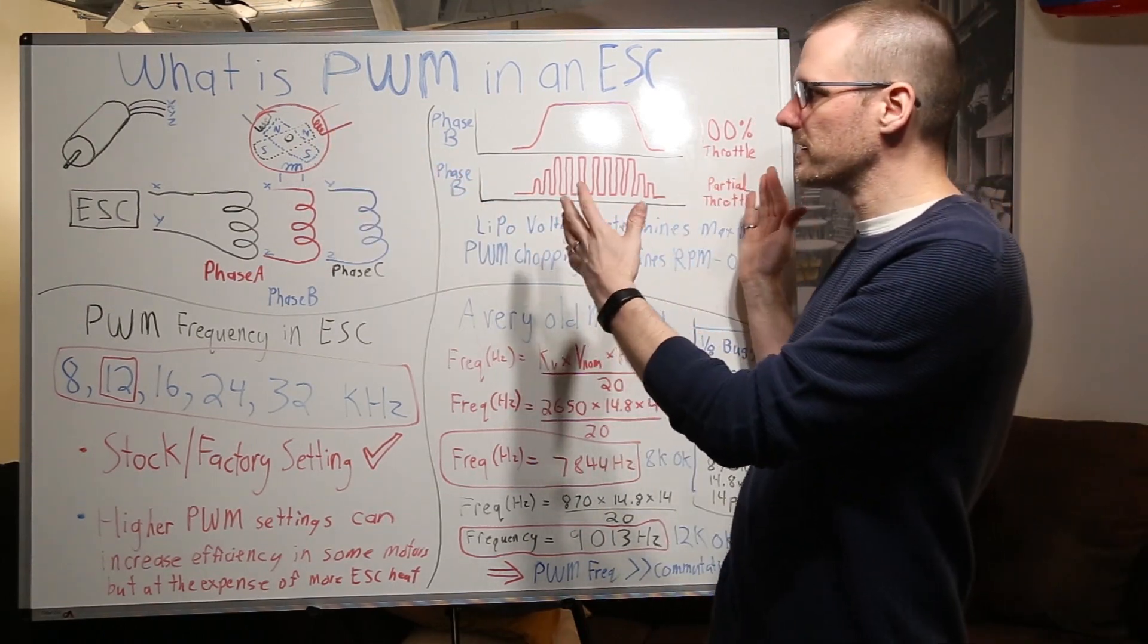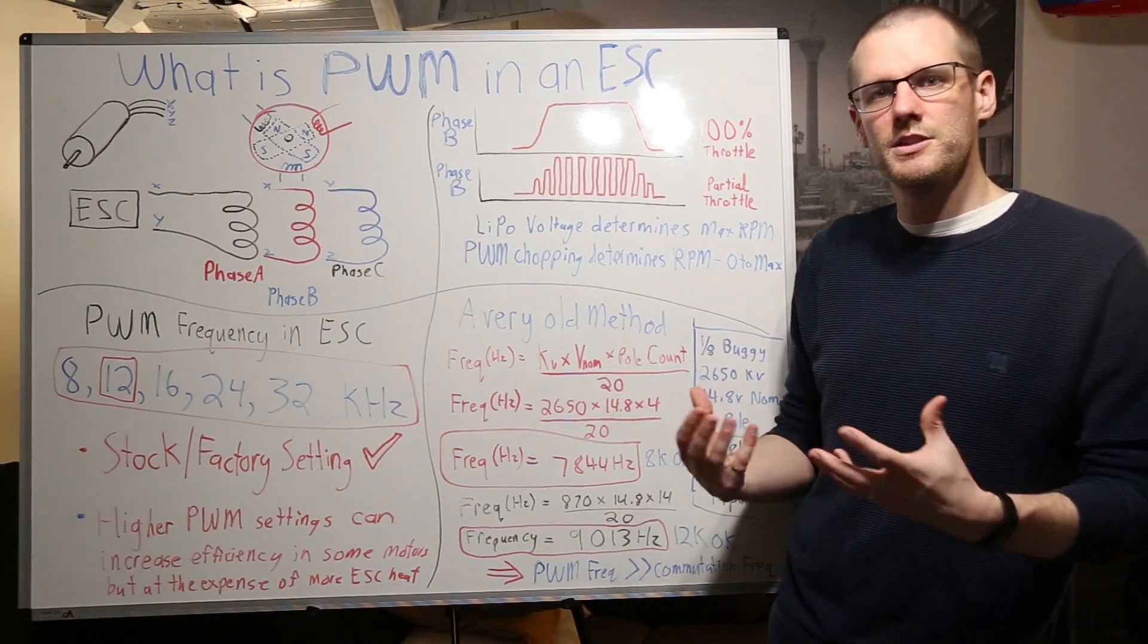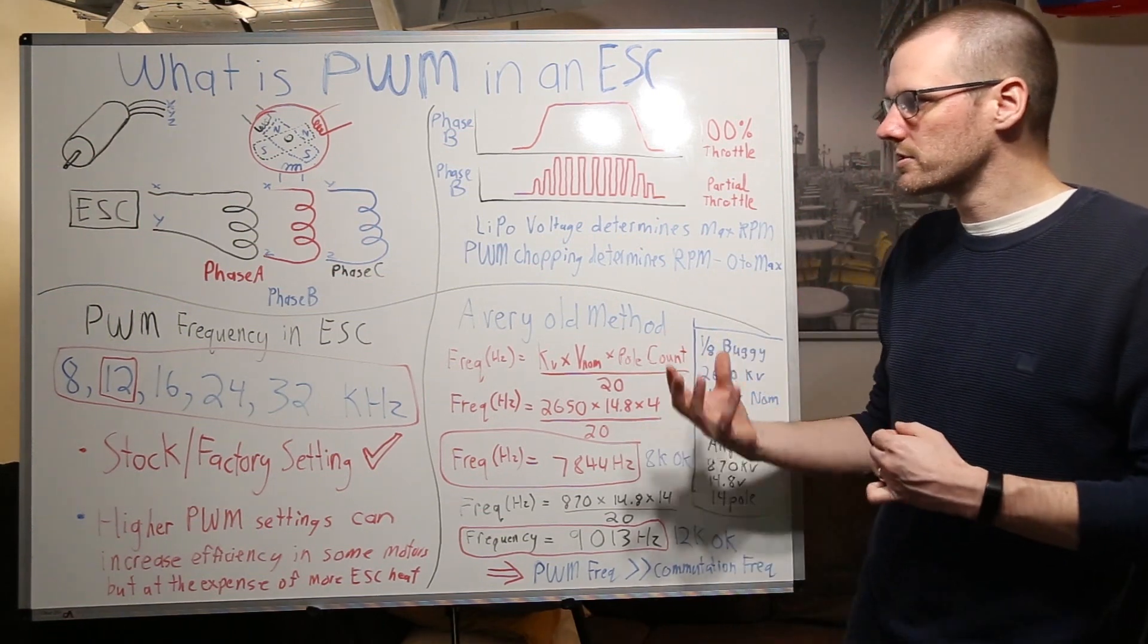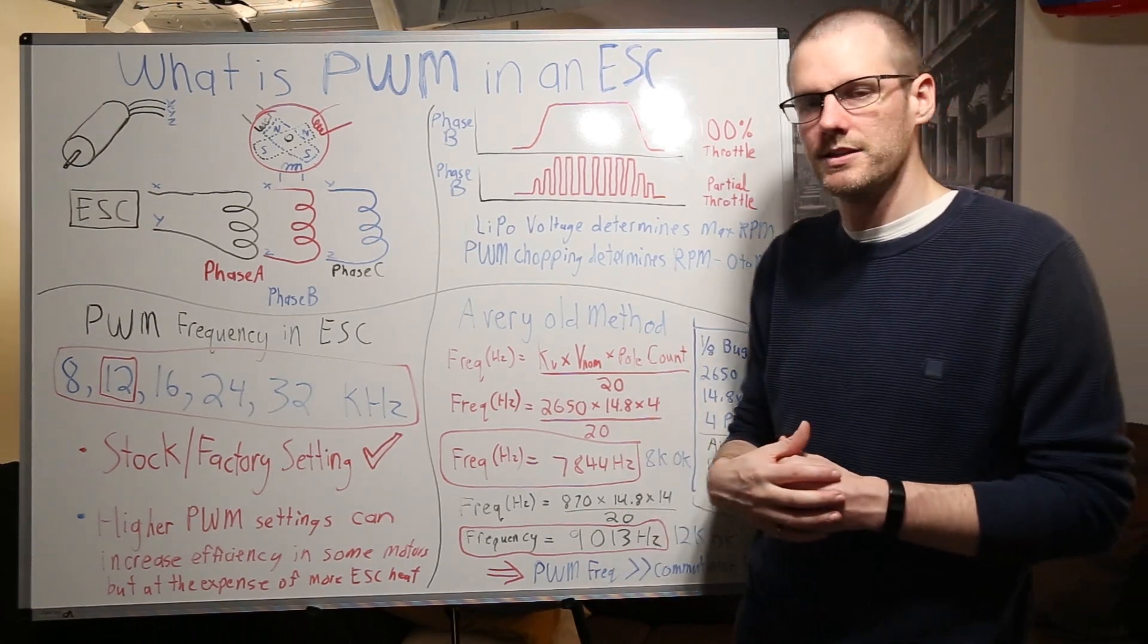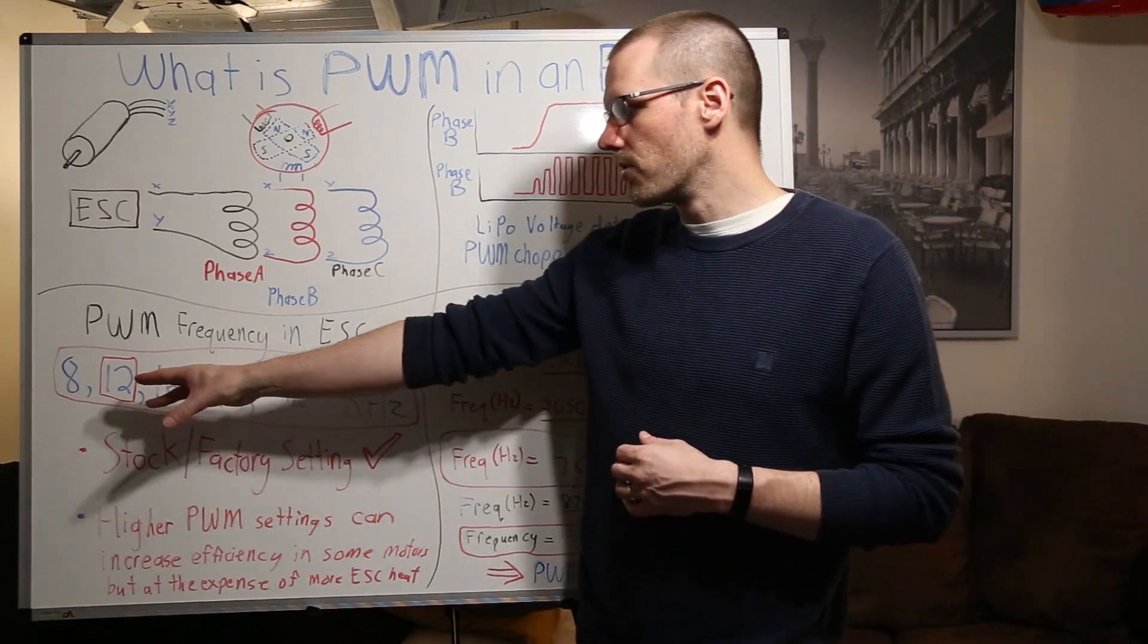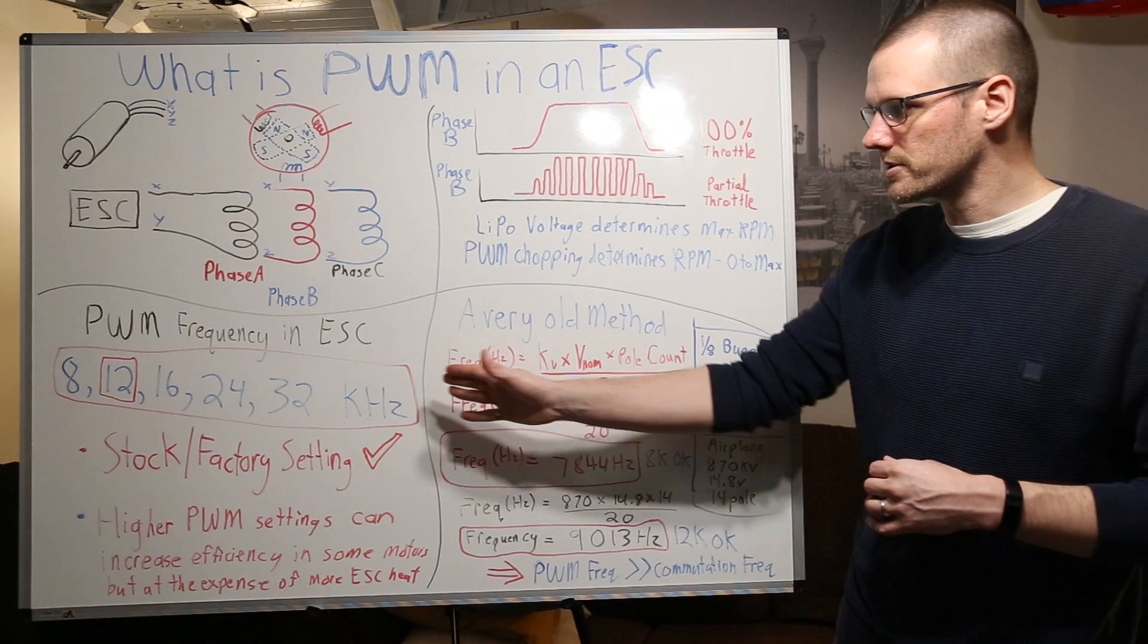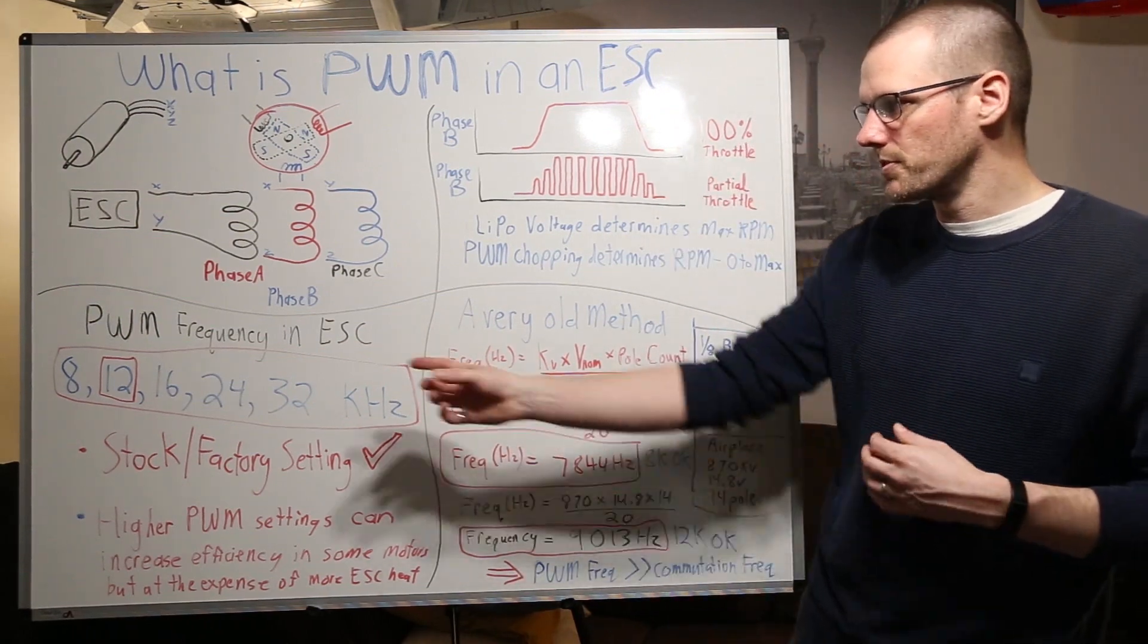Now that we cover PWM and exactly what that refers to and how it functions and drives the speed of our brushless motor let's talk about the function that you can actually program and that is the PWM rate within the speed control. Now some ESCs allow you to program these different rates. Now this is just a small collection of the common rates within our speed control so we have 8,000, 12,000, 16,000,